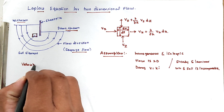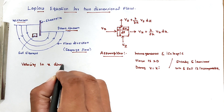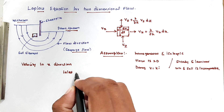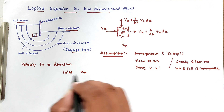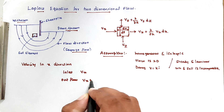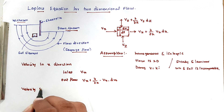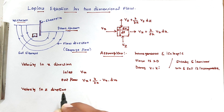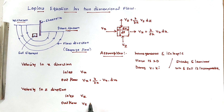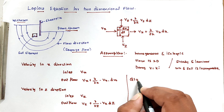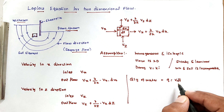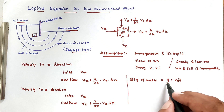Now, considering velocity in the x direction: inflow is Vx, and outflow is Vx plus (∂Vx/∂x)·dx. For velocity in the z direction: inflow is Vz, and outflow is Vz plus (∂Vz/∂z)·dz. The quantity of water is calculated as Q equals velocity times area.